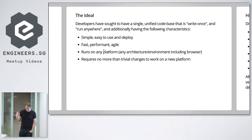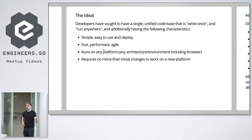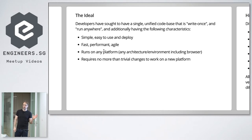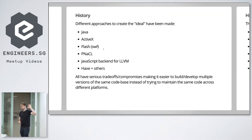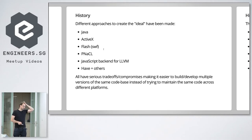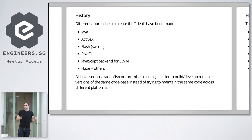As developers, we've talked for years about the ideal development environment. Ideally, we'd want some kind of magic system that ran everywhere — on every platform, every operating system, every processor. It would use very low memory, be super fast and efficient, easy to write, and you could write once and run it everywhere. There's been a lot of attempts over the years to get to that: Java, ActiveX, Flash — the list goes on and on.